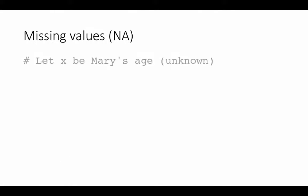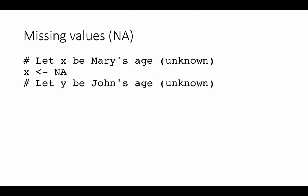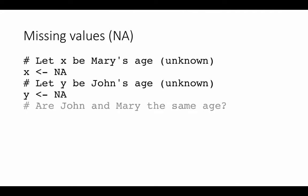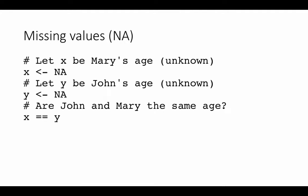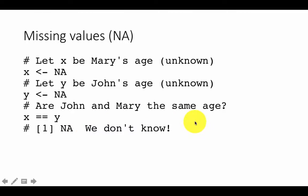To make this concrete, let X be Mary's age and we don't know her age, so X is NA. Let Y be John's age — we don't know his age, so Y is NA. Now we ask: are John and Mary the same age? That is, is X equal to Y? The answer has to be we don't know, because we don't know their individual ages. So the result has to be NA. Any operations you perform with NAs will always produce NA.